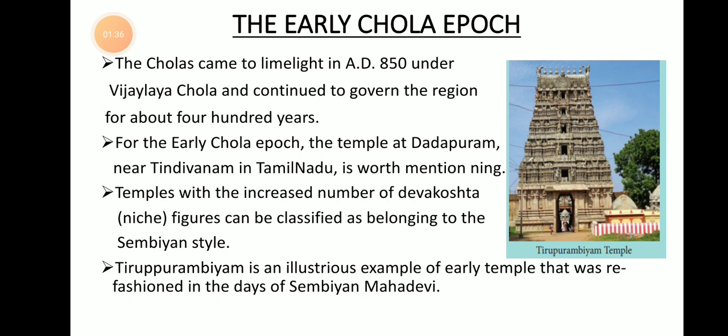The first important identification of the Early Chola Epoch is the temple at Dhadapuram, which is near Dindivanam in Tamil Nadu. This temple was built in the style of Sembian Mahadevi — she was a goddess. The Sembian style is a method followed by architects during the early Chola period, and in this style you can see many niches.